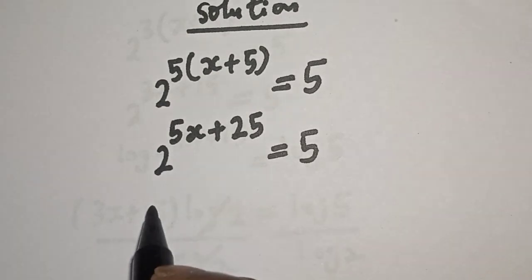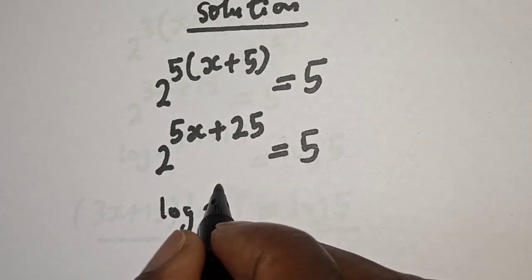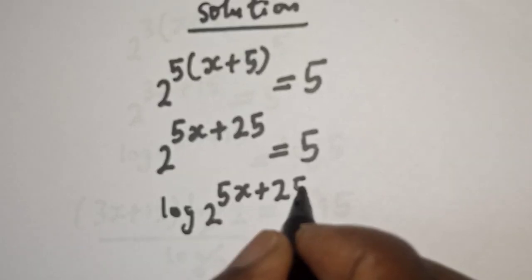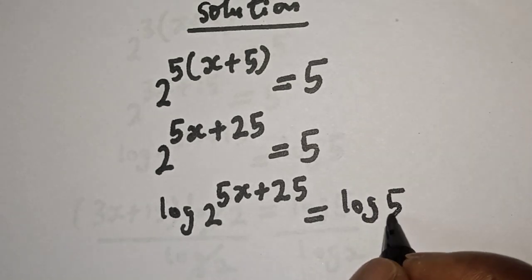Then let's take the log of both sides. Log of 2 raised to the power 5s plus 25 equals log 5.